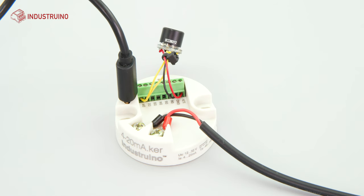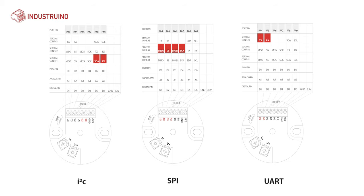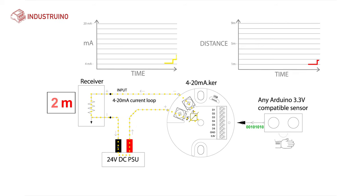420Maker has all the interfaces that you would expect on an Arduino derived board: I2C, SPI and UART. But it comes with a difference. It is powered through a 420mA loop.